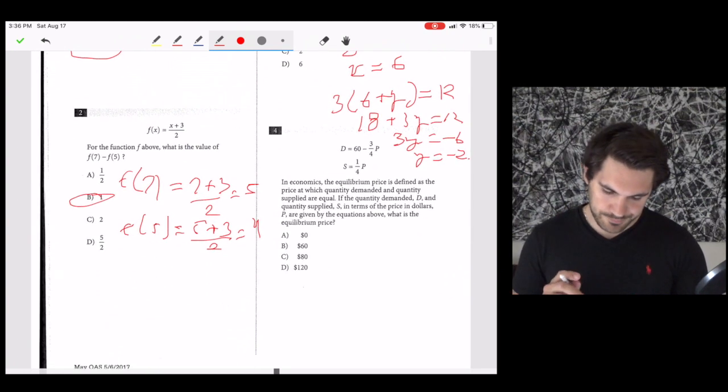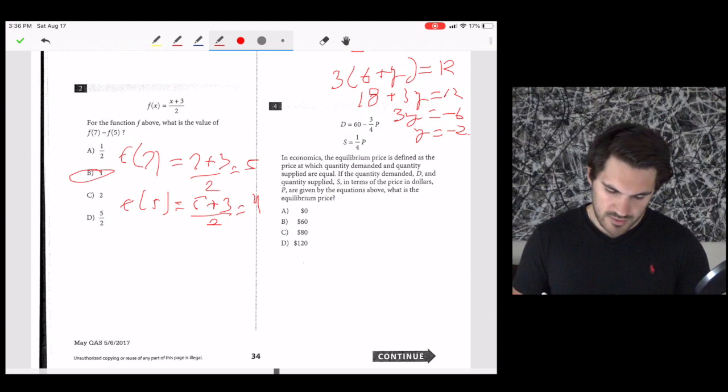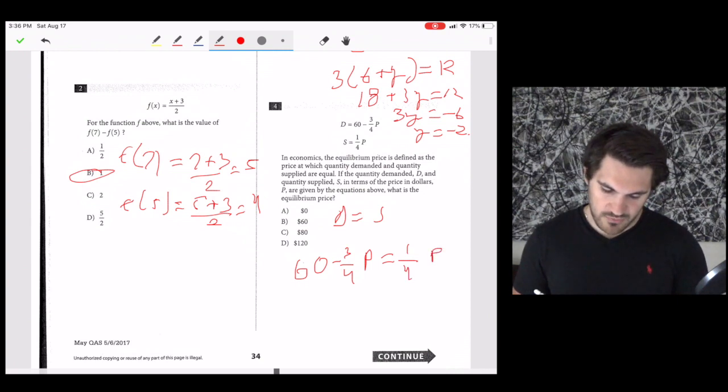Number four, in economics, the equilibrium price is defined as the price at which quantity demanded and quantity supplied are equal. If the quantity demanded d and the quantity supplied s in terms of the price in dollars p are given by the equations above, what is the equilibrium price? They basically just told us it's where they're equal. So we're going to set these equations equal to each other. d equals s, which means that 60 minus 3 over 4p equals 1 over 4p. Let's add 3 fourths p to both sides. 60 equals p. So our answer is going to be b, 60.